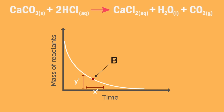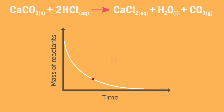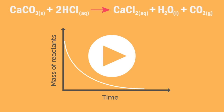The rate of reaction at point B is given by the gradient at point B, which is y-dash over x-dash. What do you think is happening to the rate of reaction as it proceeds? Pause the video here and give it a think. The answer is that the rate of reaction slows down — in other words, the rate decreases.